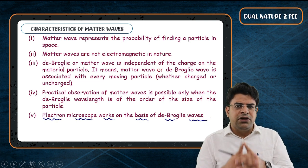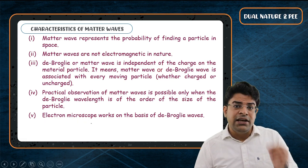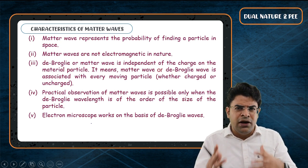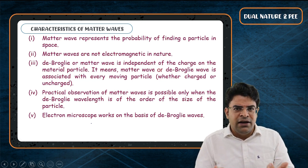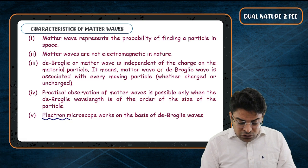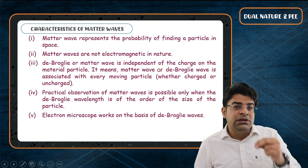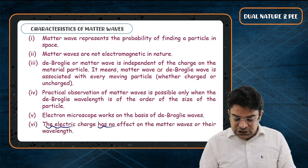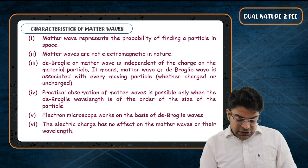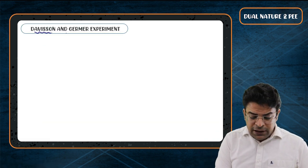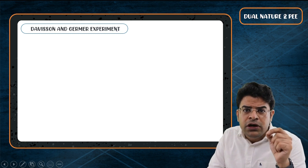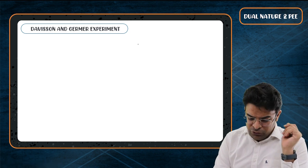Fifth, electron microscopes work on the principle of de Broglie waves. Even though electrons are not light or X-rays, they act like waves and this principle is used in electron microscopy. The electric charge has no effect on the matter wavelength — we already discussed this. This brings us to the Davisson-Germer experiment, which proved de Broglie's hypothesis.